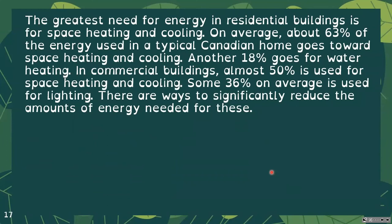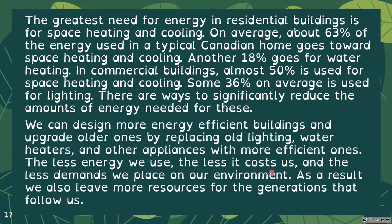The greatest need for energy in residential buildings is for space heating and cooling. On average, about 63% of the energy used in a typical Canadian home goes towards space heating and cooling, and another 18% goes for water heating. In commercial buildings, almost 50% is used for space heating and cooling, and some 36% on average is used for lighting. We can design more energy efficient buildings and upgrade older ones by replacing old lighting, water heaters, and appliances. The less energy we use, the less it costs us and the less demand we place on our environment.